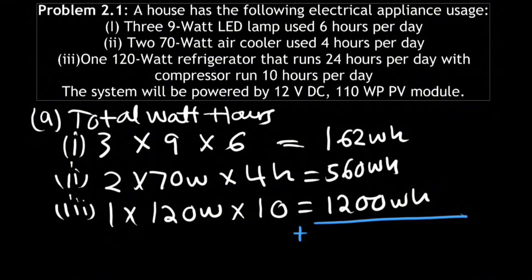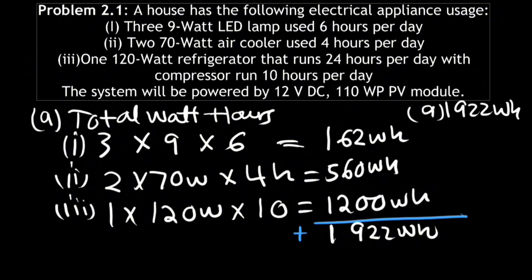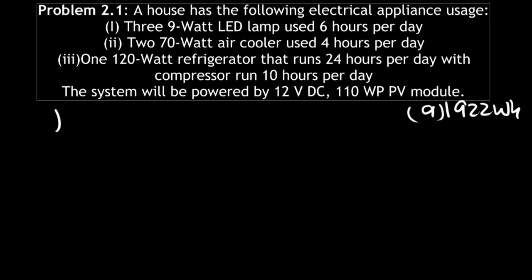The total comes to 1922 watt hours. So this is the first step — we got the total watt hours which is 1922 watt hours. Now let us move on to the second step.